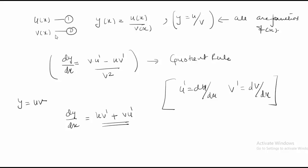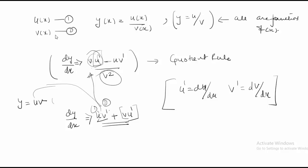It is easy to remember this way: for the product rule, u comes first and then its differentiation, then the opposite. By remembering the product rule you can easily remember the quotient rule — it is the opposite: v stays as it is, u is differentiated, there is a minus sign, and in the denominator you have v².